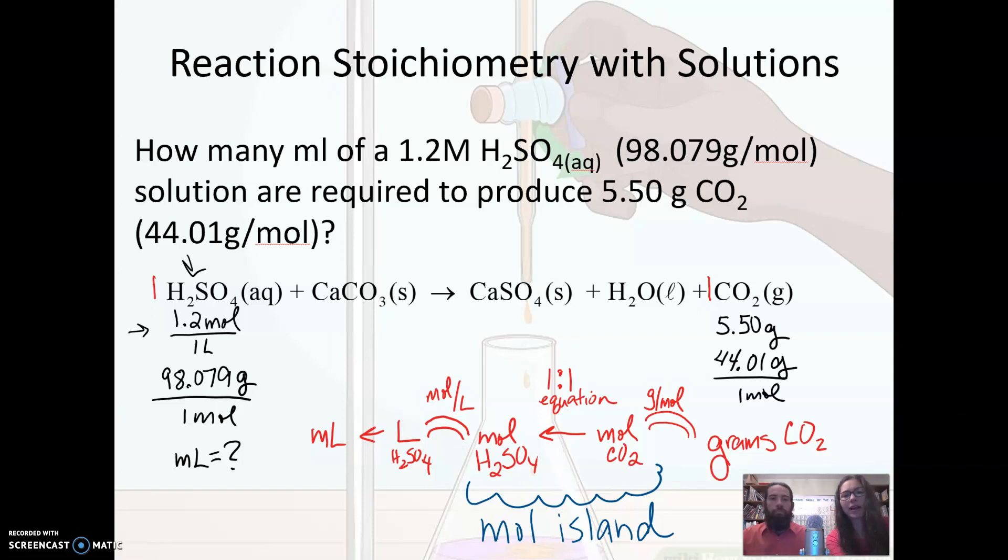For my H2SO4 over here, I have a lot of different provided data. We have the molarity, and whenever I have the capital M, I like to rewrite that as moles over one liter. That tells me that I have a factor and I can use that to do some conversions. We also have a molar mass because we have formulas from our equation, and I like to indicate what I'm looking for.